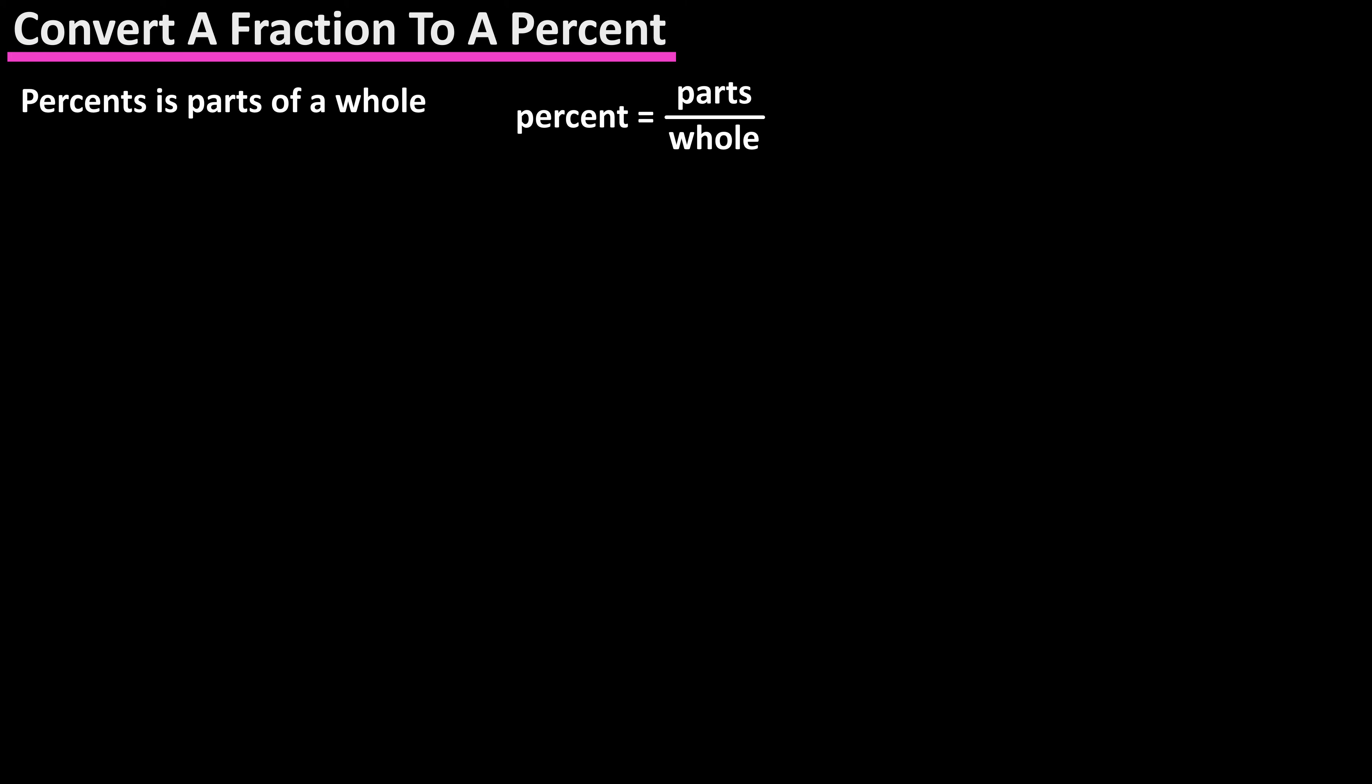Percents represent parts of a whole, and actually they mean parts of 100, so 35% means 35 out of 100, and percents can be written as fractions, in this case it's 35 over 100.